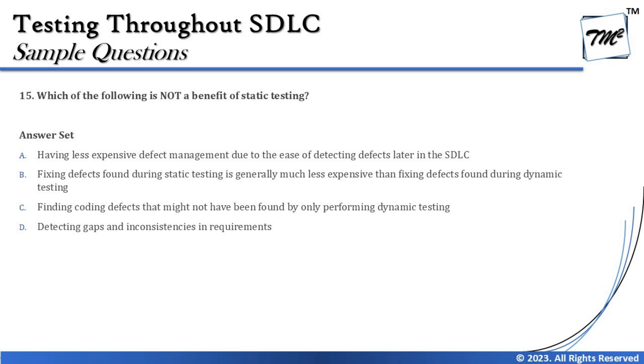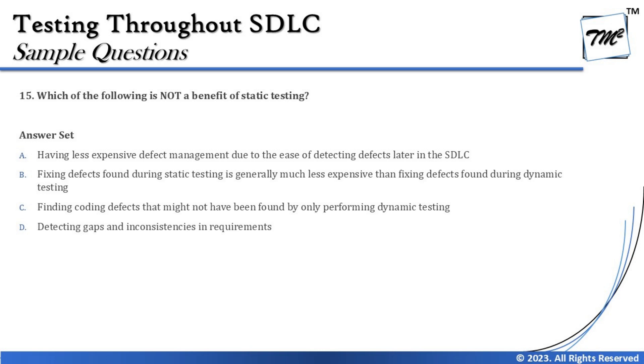Option C says: finding coding defects that might not have been found only by performing dynamic testing. Dynamic testing is limited to UI-related executions and does not guarantee that every single line of code has been executed — there will always be code paths never reached. That is where static analysis comes in — scanning through the code statically to find anomalies. So option C is also a genuine benefit of static testing.